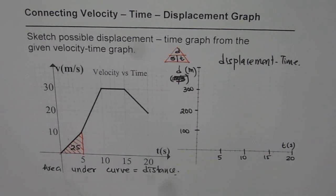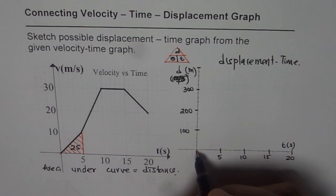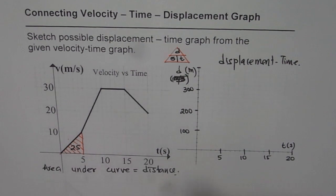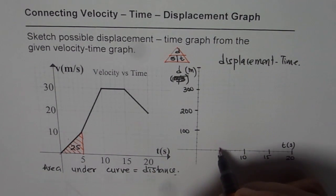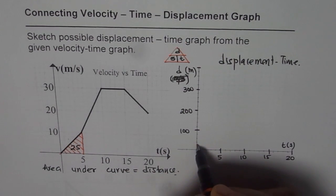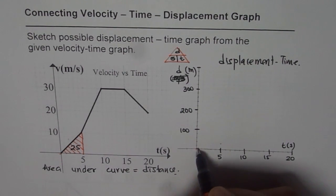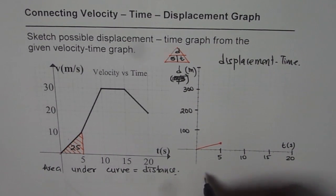The object starts from the initial position at 0. In 5 seconds it covers a displacement of 25 meters. So we plot that point — at t = 5 seconds, displacement = 25 meters. That is the displacement-time graph for the first 5 seconds.